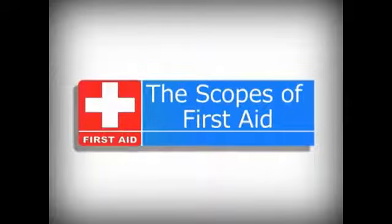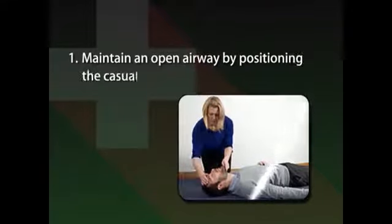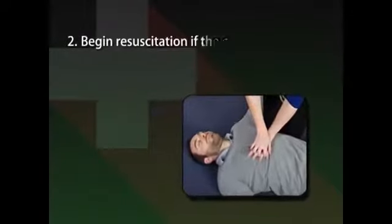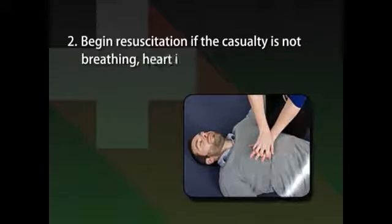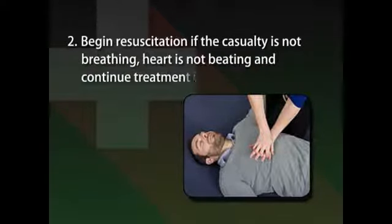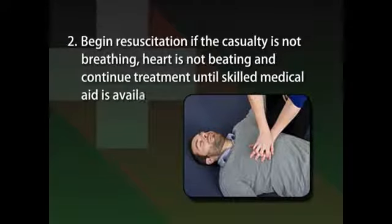There are three scopes of First Aid. The first scope is to preserve life. A First Aider can preserve the life of a casualty by way of taking up the following three vital actions: first, maintain an open airway by positioning the casualty correctly; second, begin resuscitation if the casualty is not breathing and the heart is not beating, and continue treatment until skilled medical aid is available; third, control bleeding.